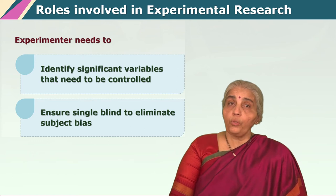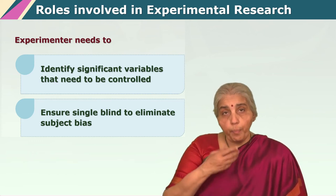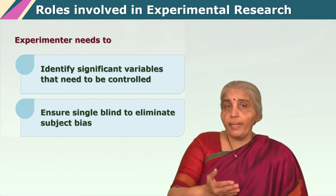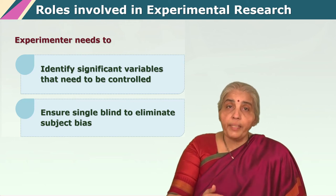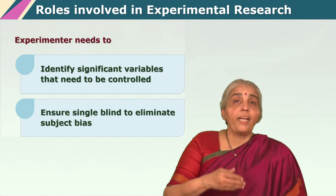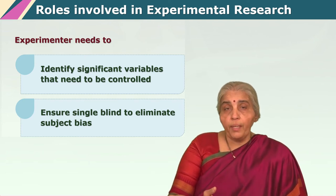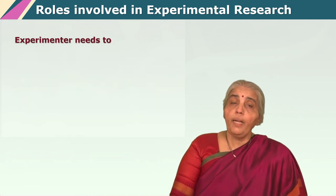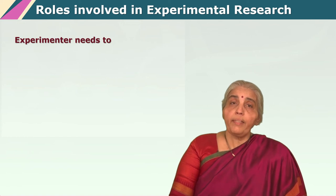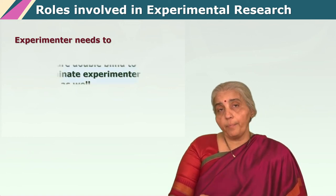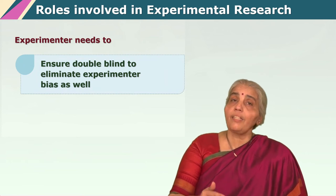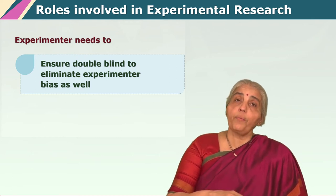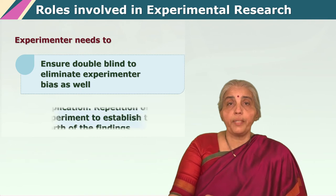If the experimenter successfully establishes a single blind then all the subjects in the pool are completely unaware whether they are experimental subjects or control subjects. But then you also have the factor of what happens if the experimenter is aware of which subjects are exactly in which group. Because if I know that this is an experimental subject I might have a very high expectation of performance from them and might actually very subtly and unknowingly encourage them to give me a better performance.